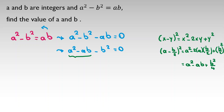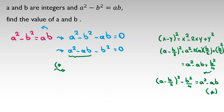Taking this to the left-hand side: (a minus b/2) squared minus b squared over four equals a squared minus ab. I call this expression 'star'. Now I substitute: a squared minus ab, by star, equals (a minus b/2) squared minus b squared over four. The rest is minus b squared, so the full equation becomes (a minus b/2) squared minus b squared over four minus b squared equals zero.